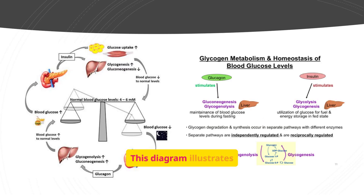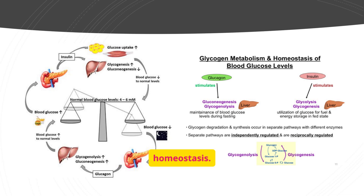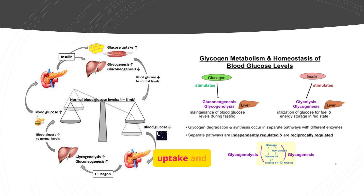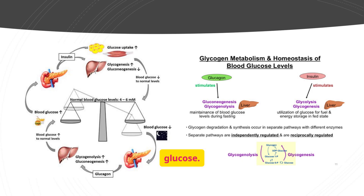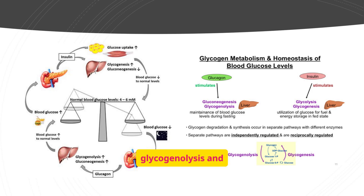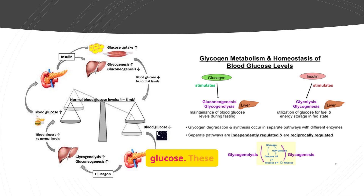This diagram illustrates glycogen metabolism and blood glucose homeostasis. Insulin stimulates glucose uptake and glycogenesis, lowering blood glucose. Glucagon stimulates glycogenolysis and gluconeogenesis, raising blood glucose. These processes are tightly regulated to maintain normal blood glucose levels.